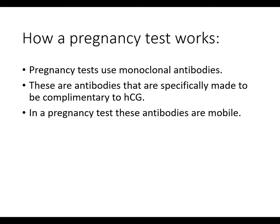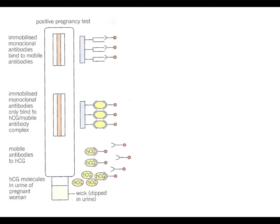In a pregnancy test, the monoclonal antibodies are mobile - they are part of what we call the mobile phase. If we look at a pregnancy testing strip, there are three areas: the mobile phase area containing these monoclonal antibodies, an area with immobilized antibodies, and another area with immobilized antibodies.